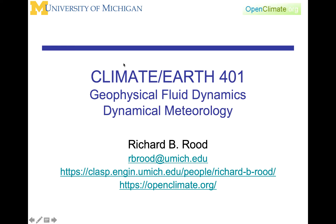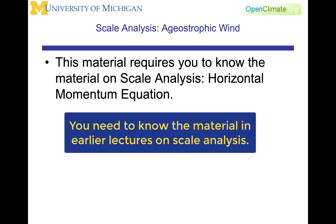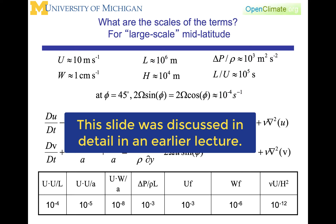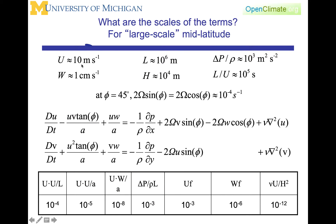In this lecture in Climate and Earth 401, we're going to talk about the scale analysis of the horizontal momentum equation, which leads us to the ageostrophic wind. You will need to know the material from the lecture on the scale analysis of the horizontal momentum equation. We're going to start from the same place where we ended there, looking at the horizontal momentum equations — the equations for u and v — using the characteristic scales for the large-scale mid-latitude flow.